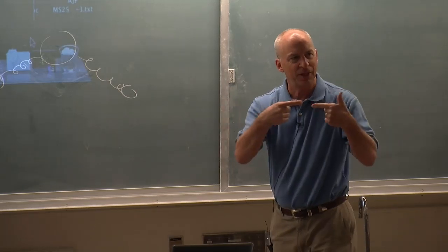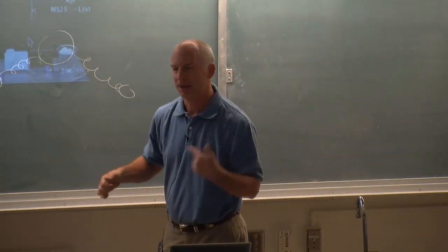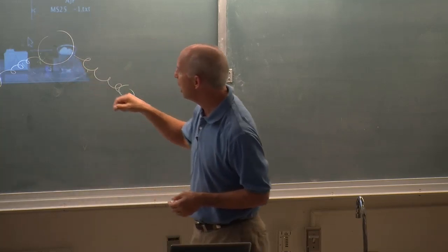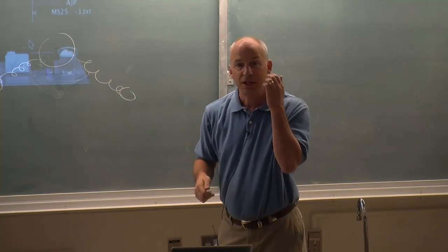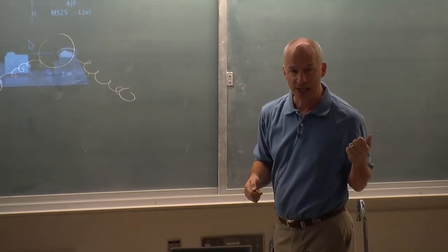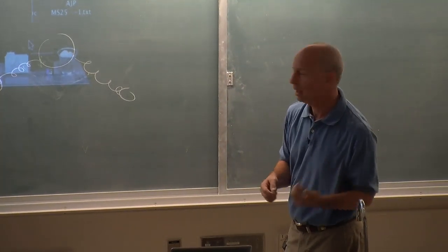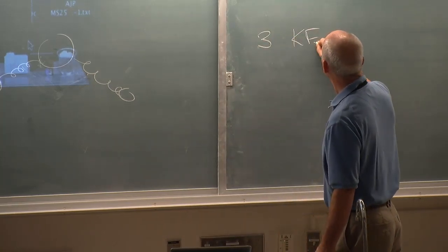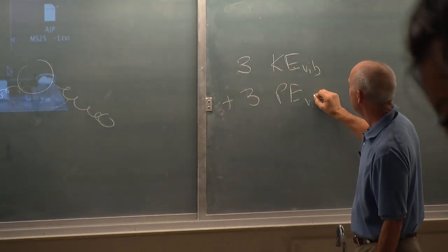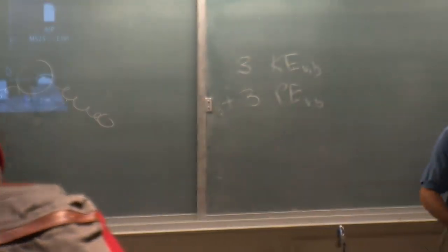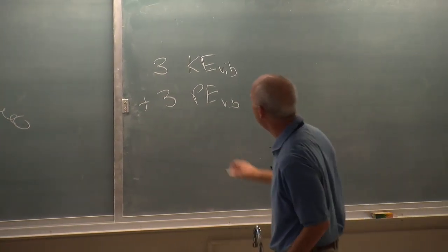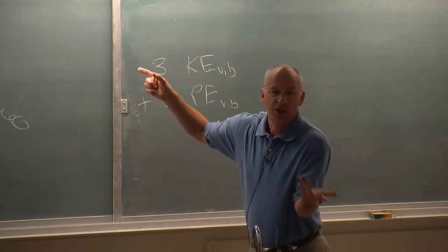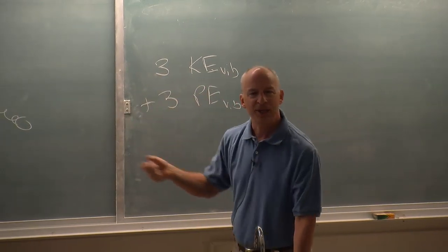If it were a linear molecule then it would only have two rotations, but it has three. So you end up with nine kinetic energies to worry about: three of them are translation, three of them are rotation, so you end up with three vibrational kinetic energies. Every time you have a vibrational kinetic energy there's a vibrational potential energy — they go hand in hand. It looks a little funny because you say there are three vibrations but somehow there are only two bonds.